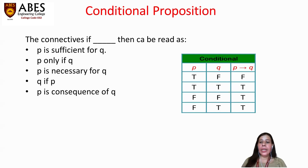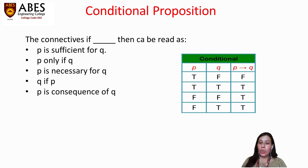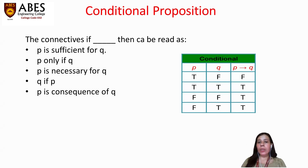The connective 'if…then' can be read as 'P is sufficient for Q,' or 'P only if Q,' or 'Q is necessary for P,' or 'Q if P,' or 'P is a consequence of Q.' Now let us take a look at its truth table for the conditional.